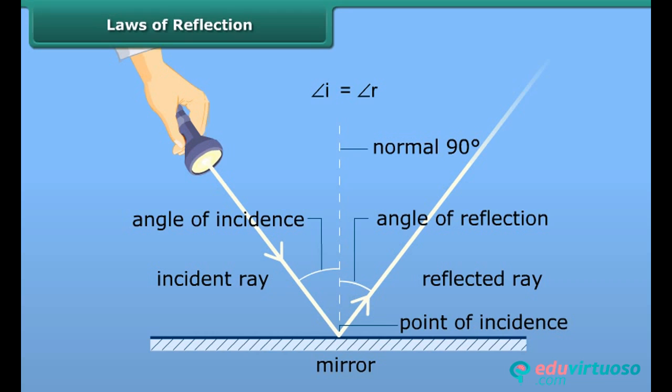The reflection of light at a surface obeys the following two laws, which are called the laws of reflection. According to this law, angle of incidence is always equal to the angle of reflection.